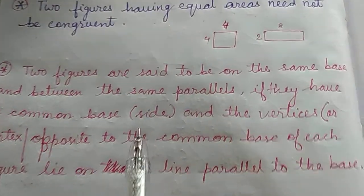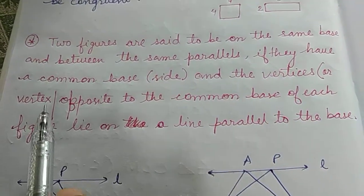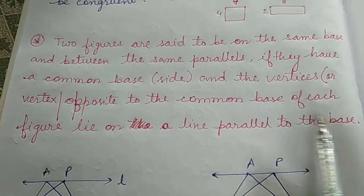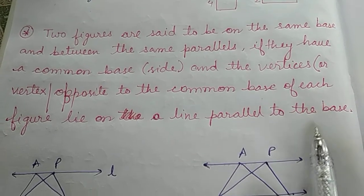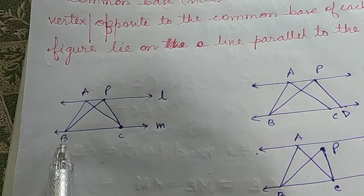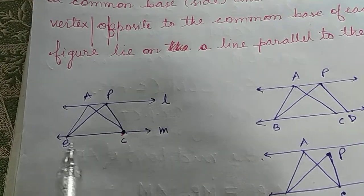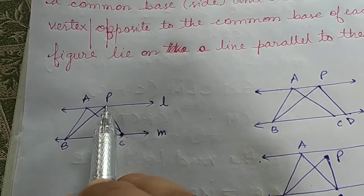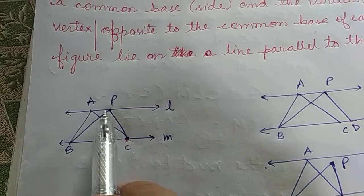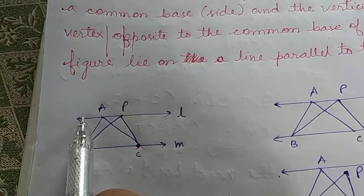Now the third point — the last one before starting the exercise. The statement: two figures are said to be on the same base and between the same parallels if they have a common base or side, and the vertices opposite to the common base of each figure lie on a line parallel to the base. For example, triangle ABC and triangle PBC are on the same base BC, and the vertices A and P — opposite to base BC — lie on the same line L, which is parallel to line M.